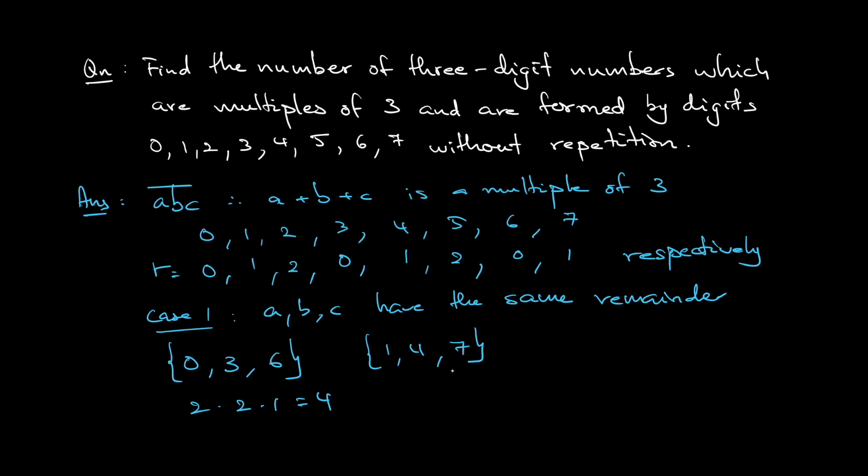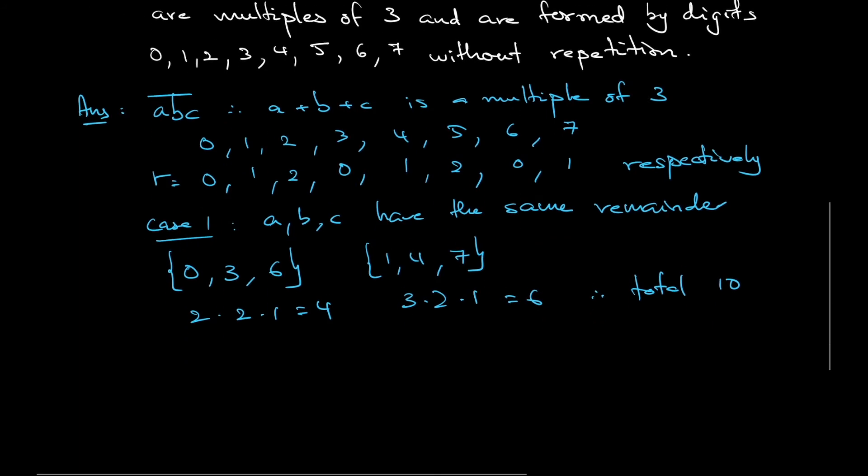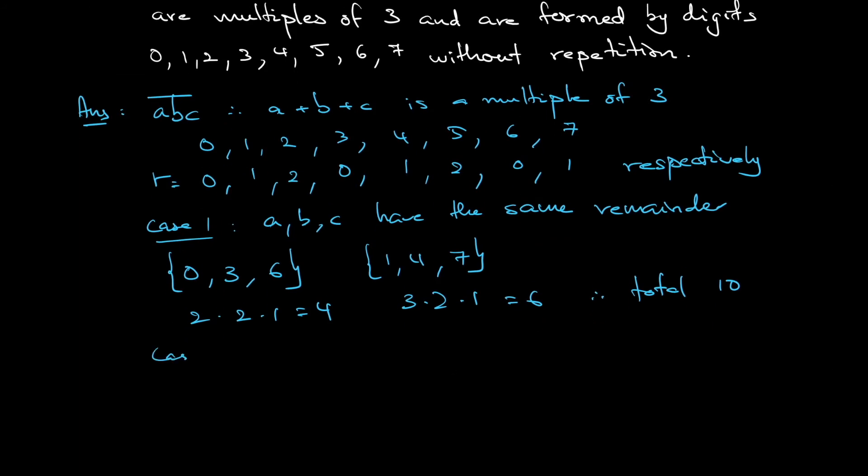No restriction, just 3 times 2 times 1, so it's a 6. Total is a 10 for case 1. For case 2, it is when a, b, c have different remainders.